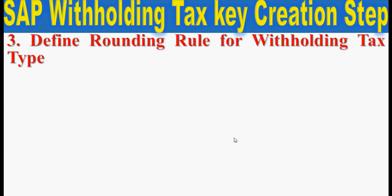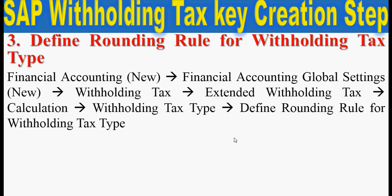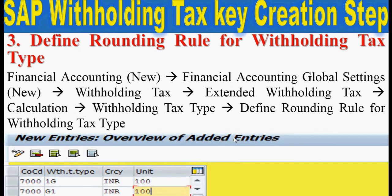The third step is to define the rounding rule for withholding tax. Go through this path: Financial Accounting New > Financial Accounting Global Settings New > Withholding Tax > Extended Withholding Tax > Calculation > Withholding Tax Type > Define Rounding Rule for Withholding Tax Type. Click on new entry, enter your company code, withholding tax type, currency, and press save.